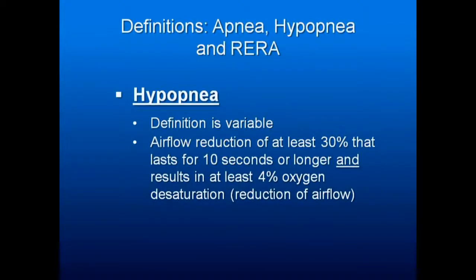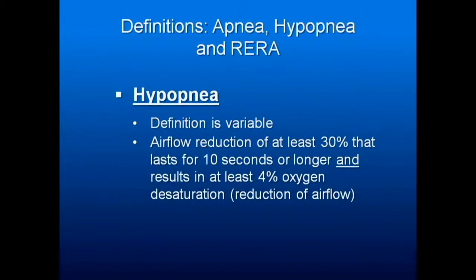Hypopnea — the definition is very variable. The standard is an airflow reduction of 30% lasting for 10 seconds, resulting in at least 4% oxygen desaturation. It used to be a 3% oxygen desaturation, but lately the government has been saying it must be 4%, because they want it harder to grade a hypopnea, so fewer appliances and less CPAP are being delivered. These terms are in flux — you've got to find out what your sleep study is using as the definition.